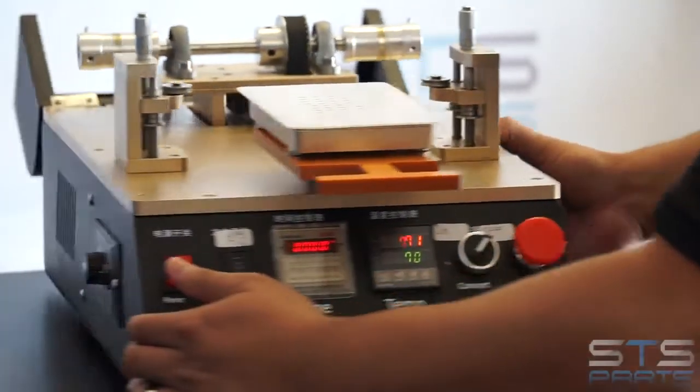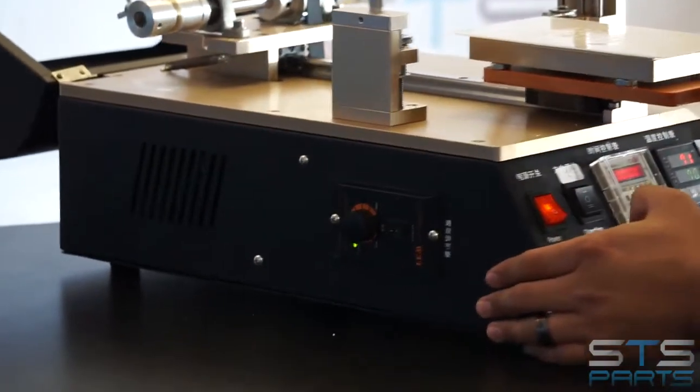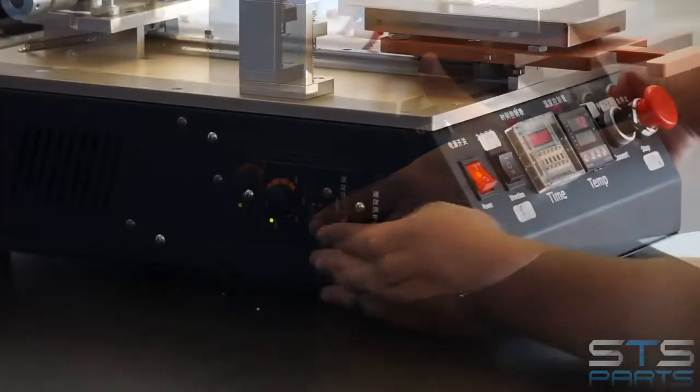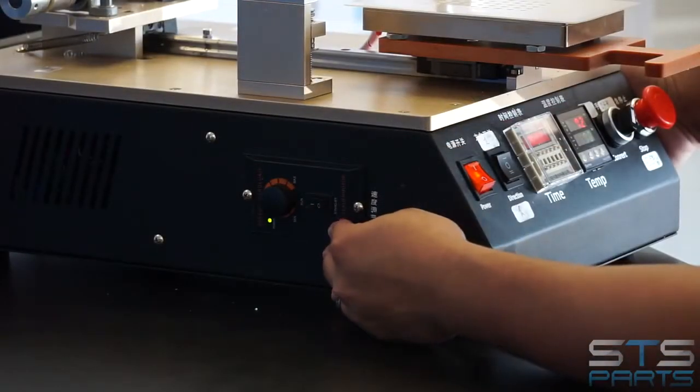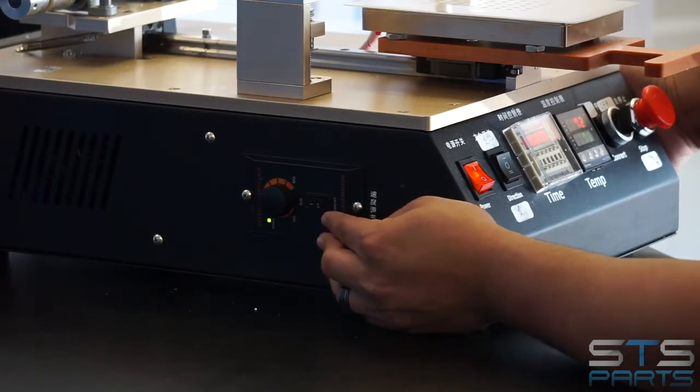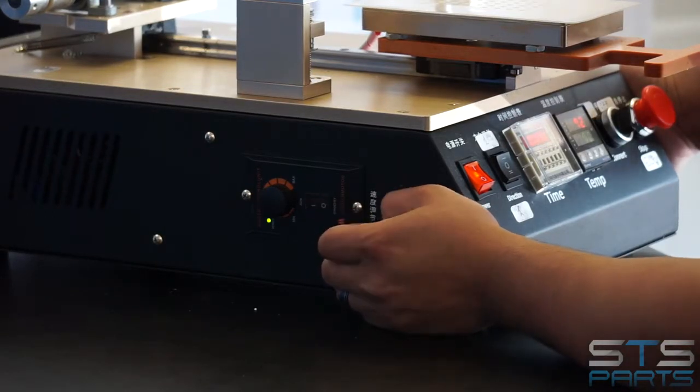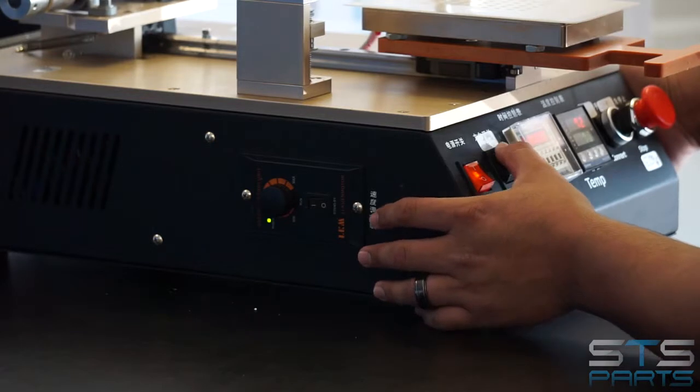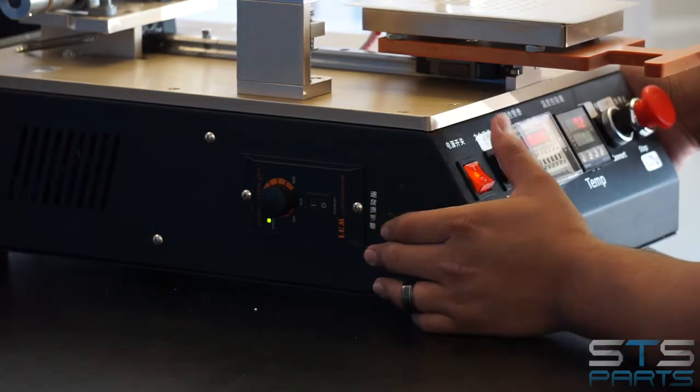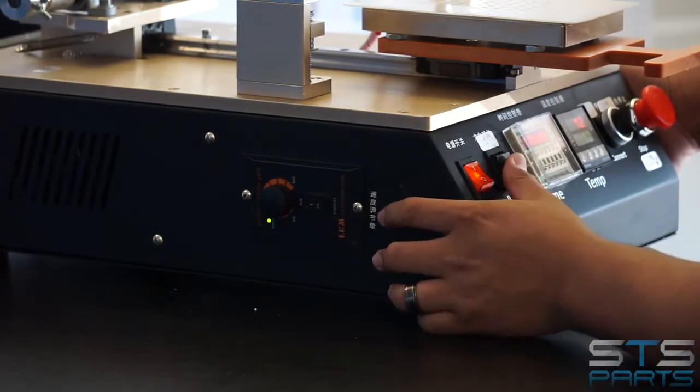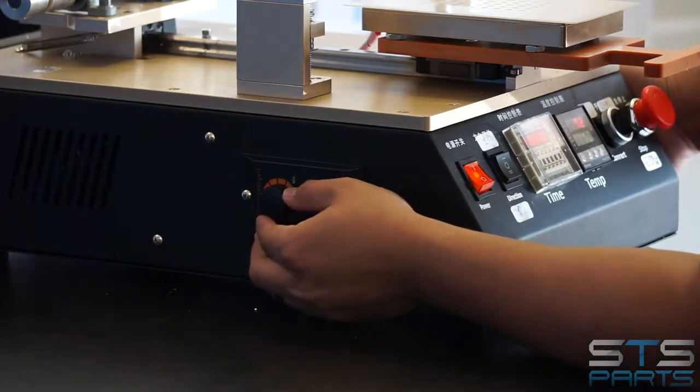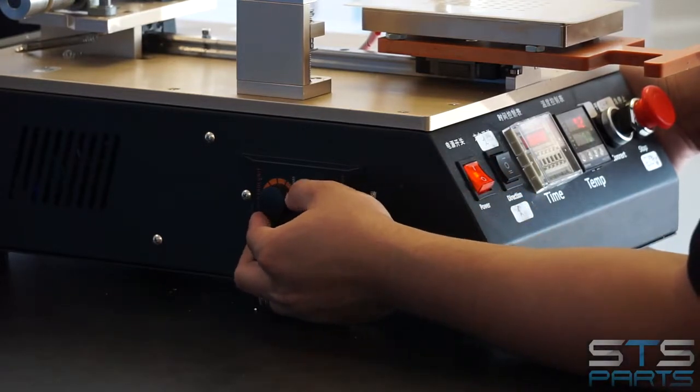And then on the other side, it has a control for your motor, how fast you want it to be, and it also has a switch for it. So if you were to turn this off and you want it to go to any direction, it will not spin. So you have to have this on in order for that motor to work and then you can set the speed at your convenience.